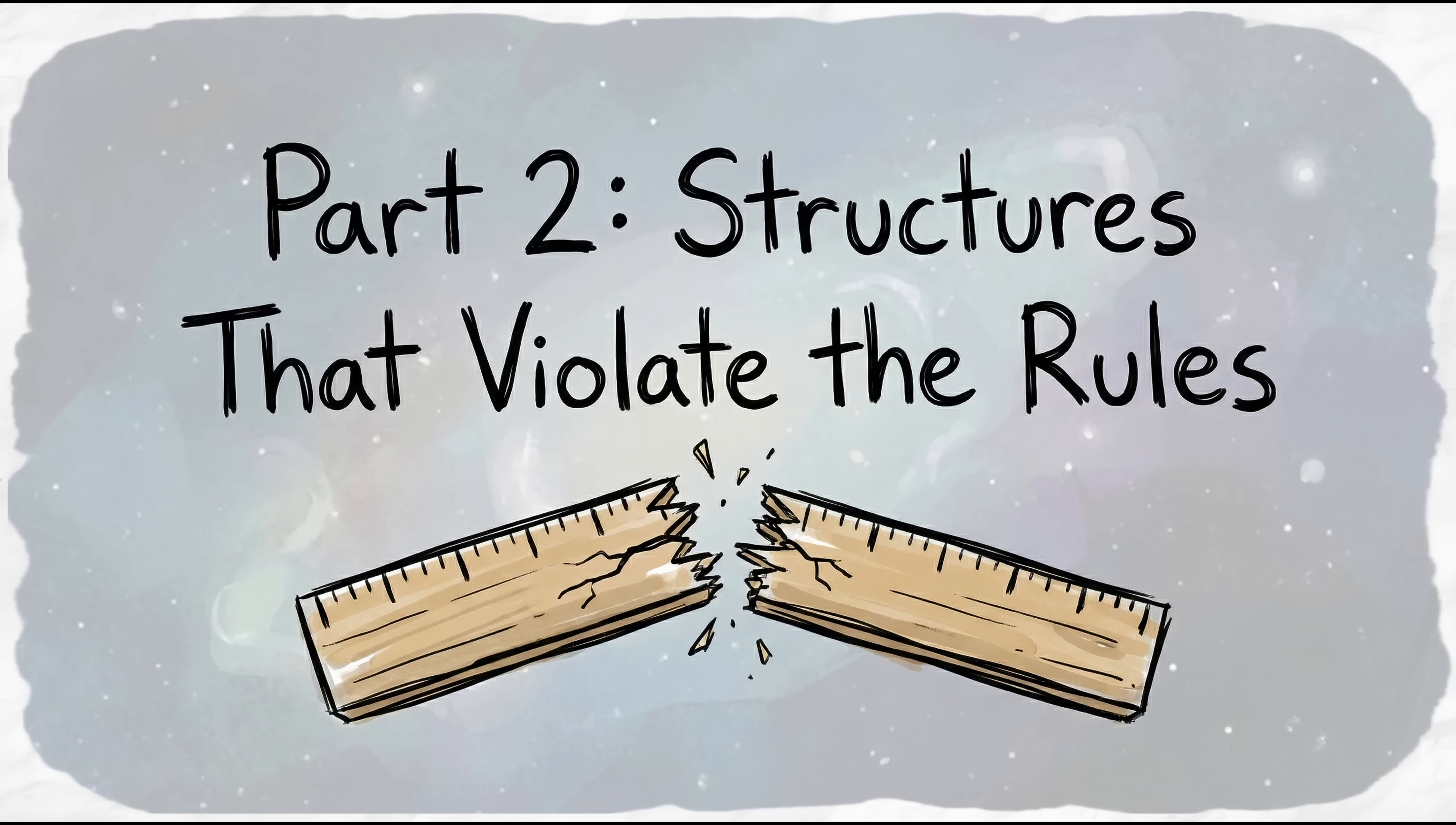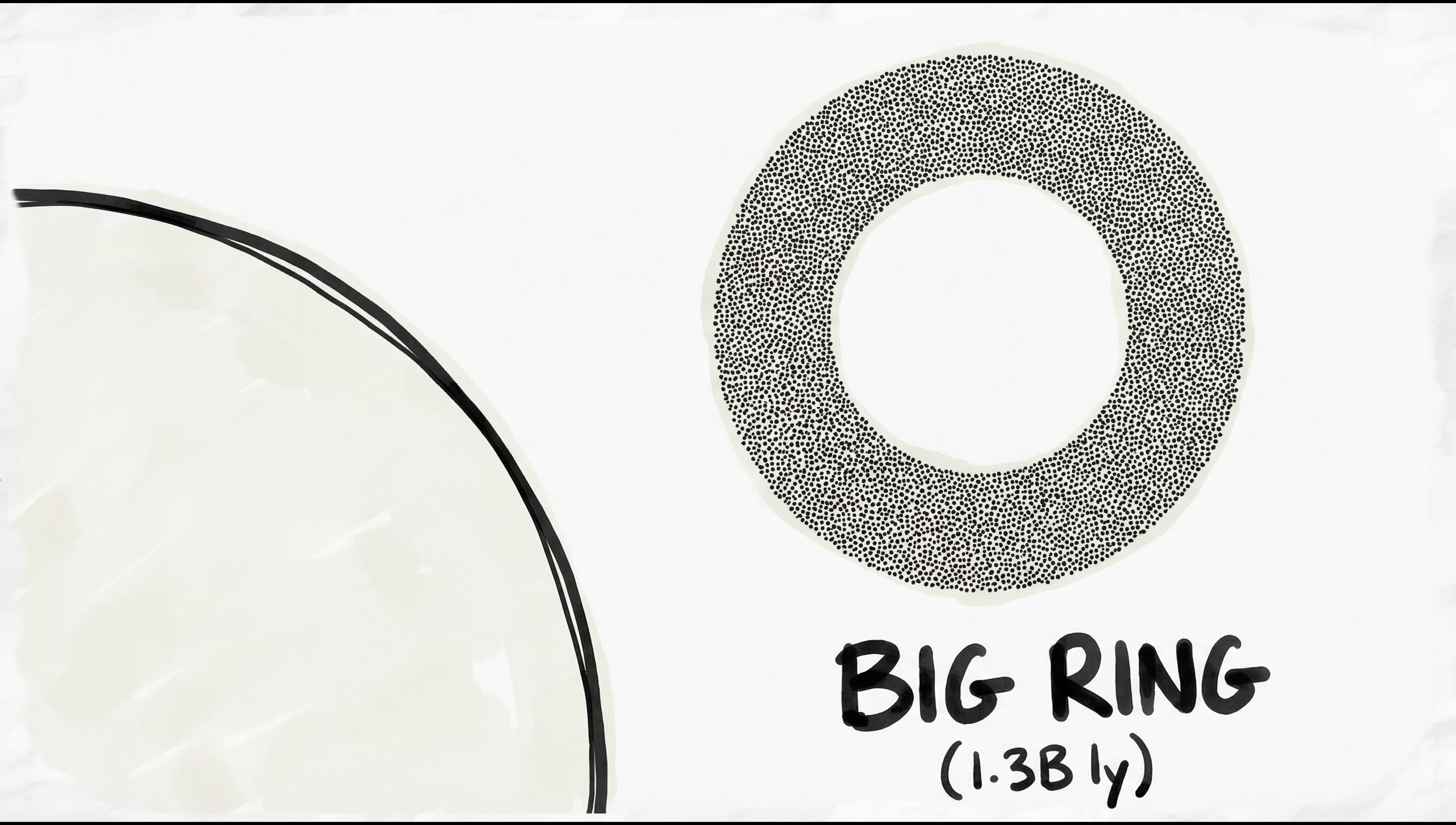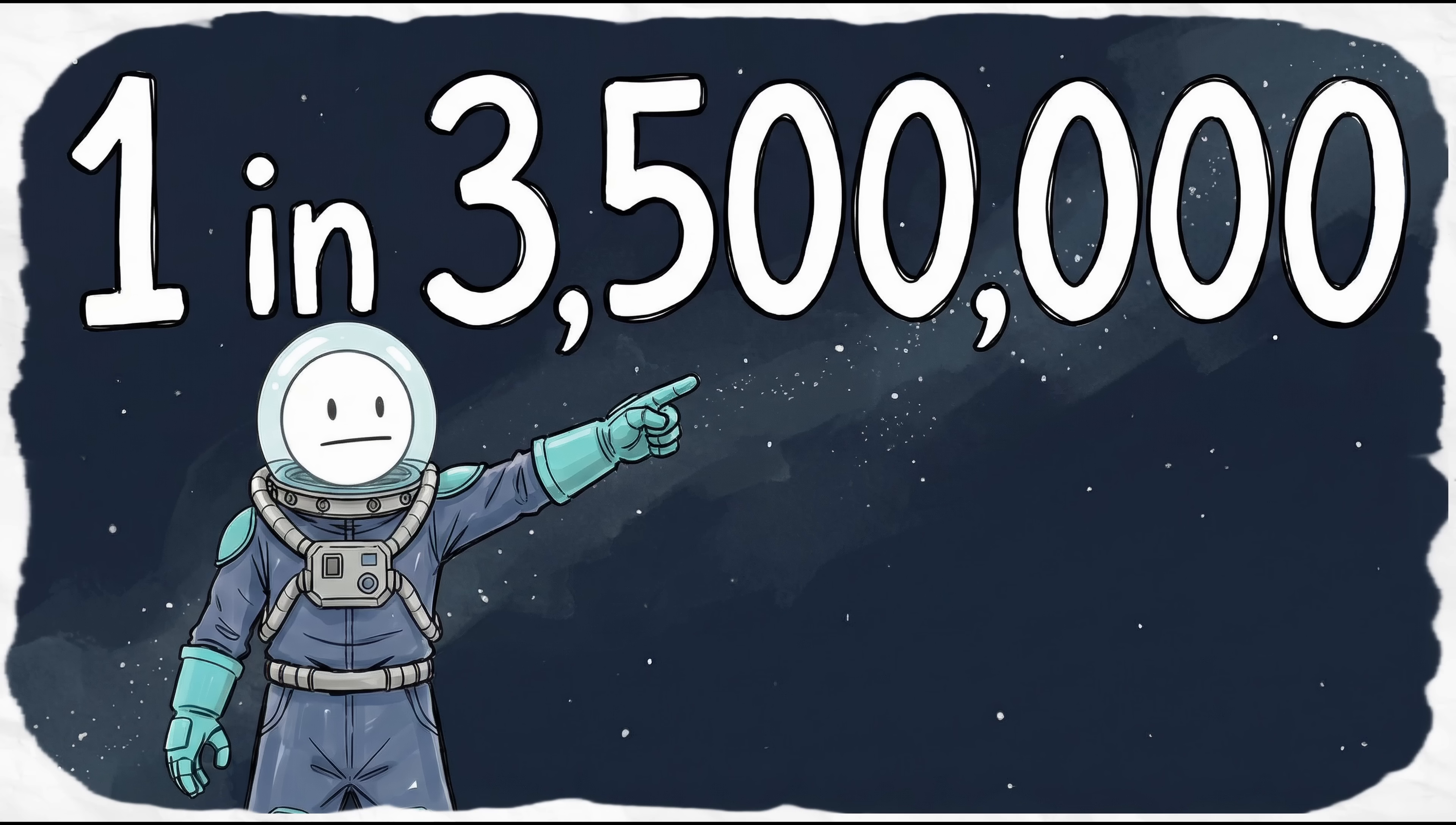Part Two, Structures That Violate the Rules. First, look at the giant arc and the big ring. Together, they span billions of light-years. The odds of these structures existing by chance are roughly 1 in 3.5 million.